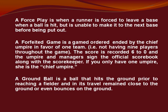A forfeited game is a game ordered and ended by the chief umpire in favor of one team. One example is not having nine players throughout the game. The score is recorded 6-0, and the umpire and manager sign the official scorebook along with the scorekeeper. If you only have one umpire, she is the chief umpire.